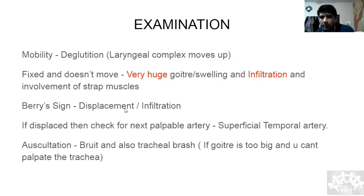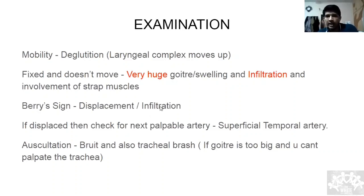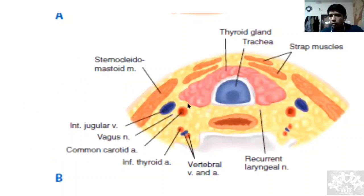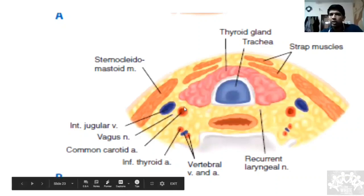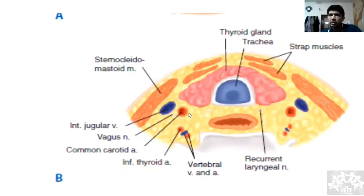Coming to Berry's sign: when you cannot palpate the carotid artery in a case of thyroid swelling. Two possibilities — displacement or infiltration. Since the deep fascia is very strong, the thyroid will invariably push the carotid laterally. When pushed laterally, you can no longer palpate it against Chassaignac's tubercle (transverse process of C6).